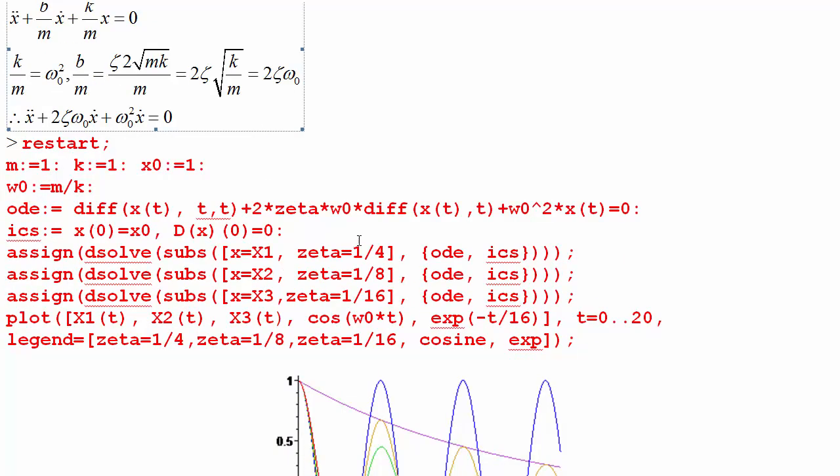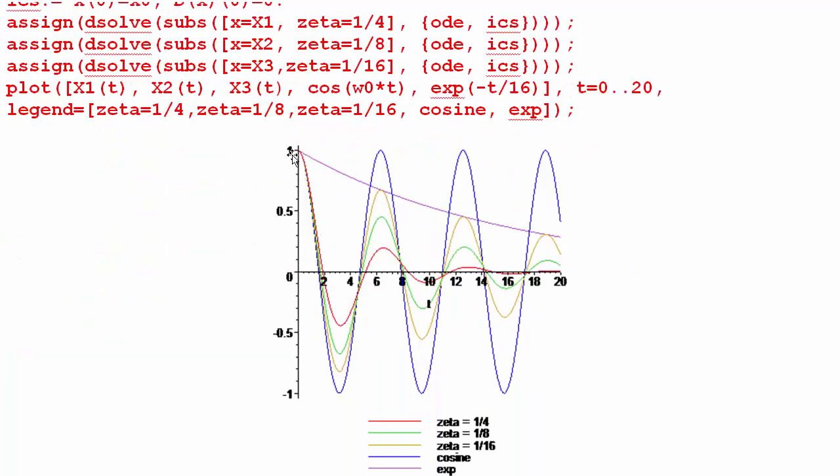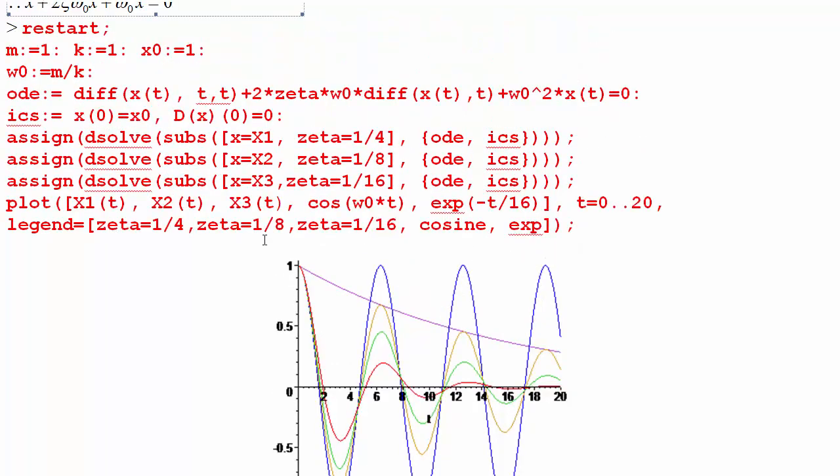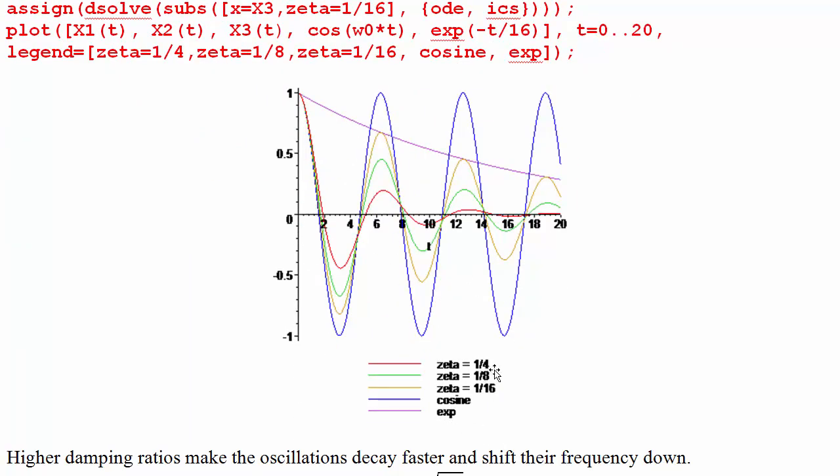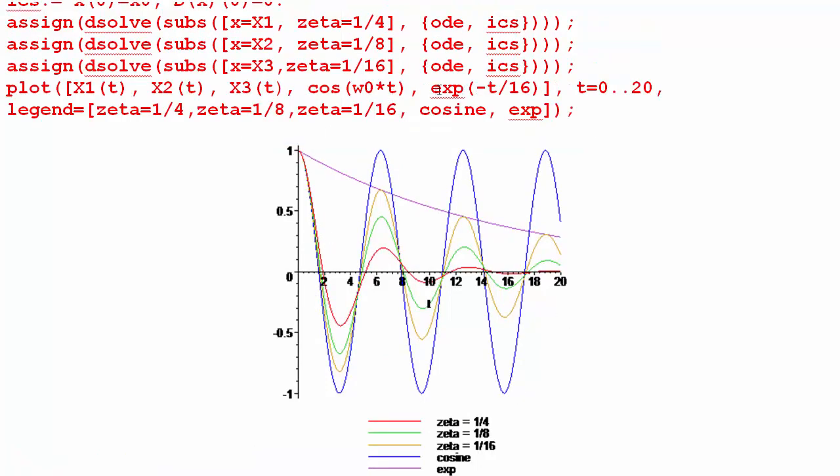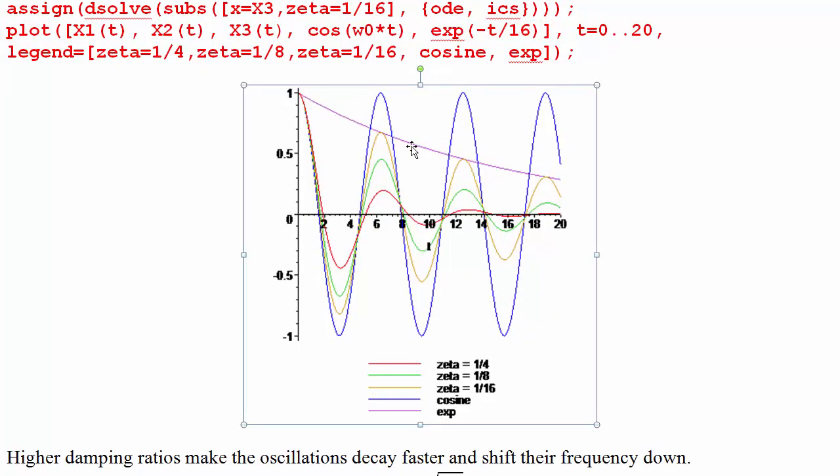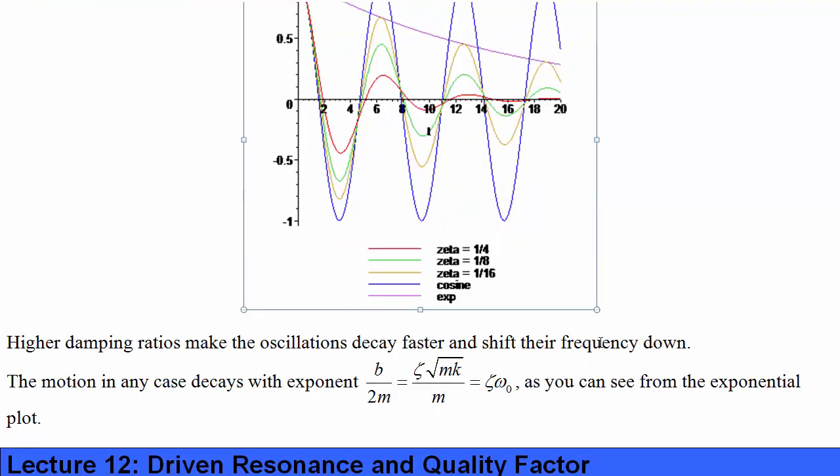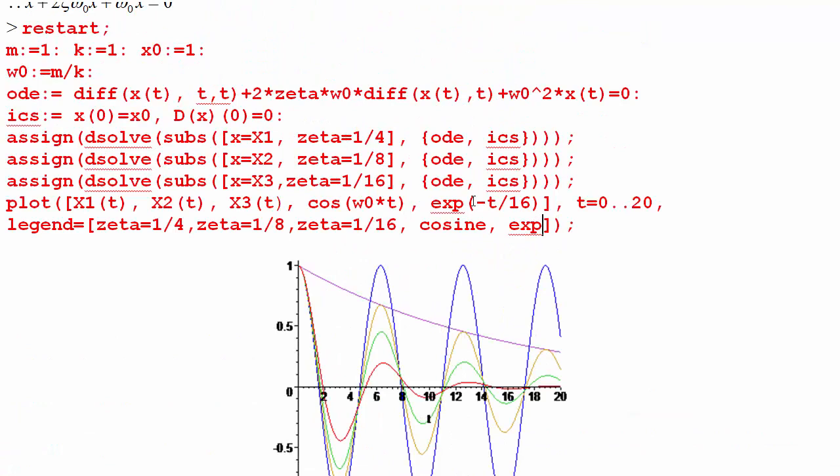Replacing the differential equation in Maple with this new one we can plot the solution. The solutions for the different zetas using the legend function here tell us that as we start to decrease the damping ratio we get less and less damping so the solutions decay a little bit slower. Comparing with in blue the cosine you can see that the solutions are basically sinusoidal but they're decaying away at this exponential term in front e to the negative t over 16 modulating the cosine would give you exactly this zeta equals 1 over 16 term there. Higher damping ratios make the oscillations decay faster and shift their frequency down. The motion decays according to the damping ratio times the natural frequency as you can see by what I plotted here.